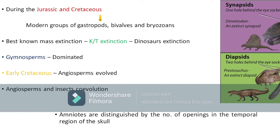During the Jurassic and Cretaceous periods, modern groups of gastropods, bivalves, and bryozoans all evolved. Then came the mass extinction we still know about today — caused by an asteroid impact — the Cretaceous extinction, or KT extinction. Because of this event, all dinosaurs were wiped from the earth, and we have only their fossils.